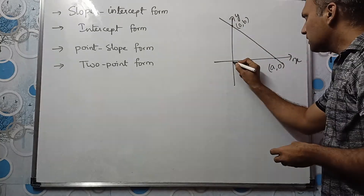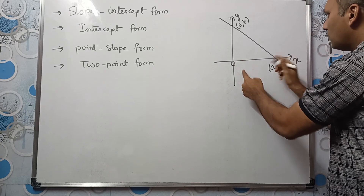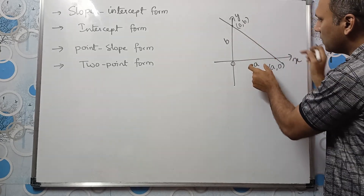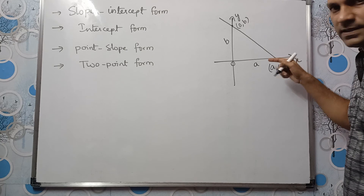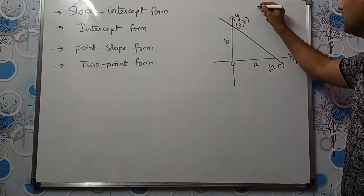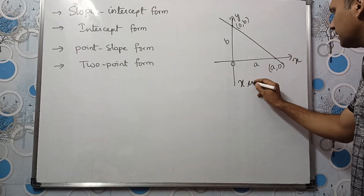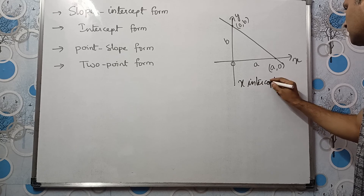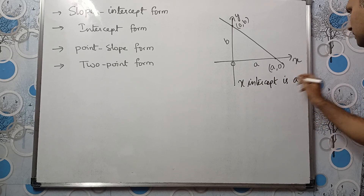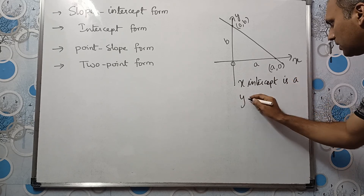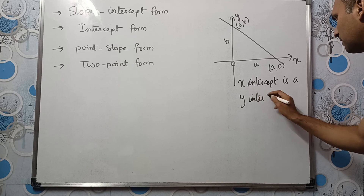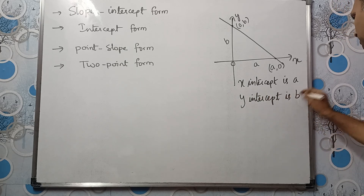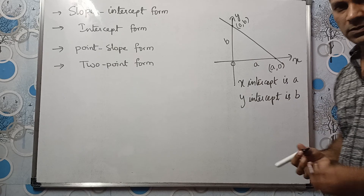This is the origin. This distance is a, and this is b. So a is called the x-intercept and b is called the y-intercept. Both are positive here.